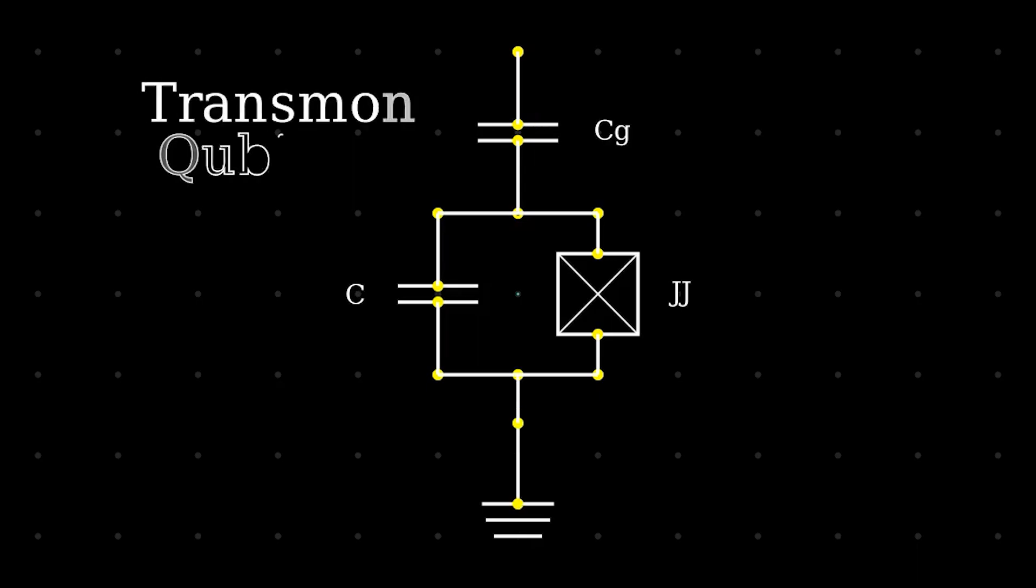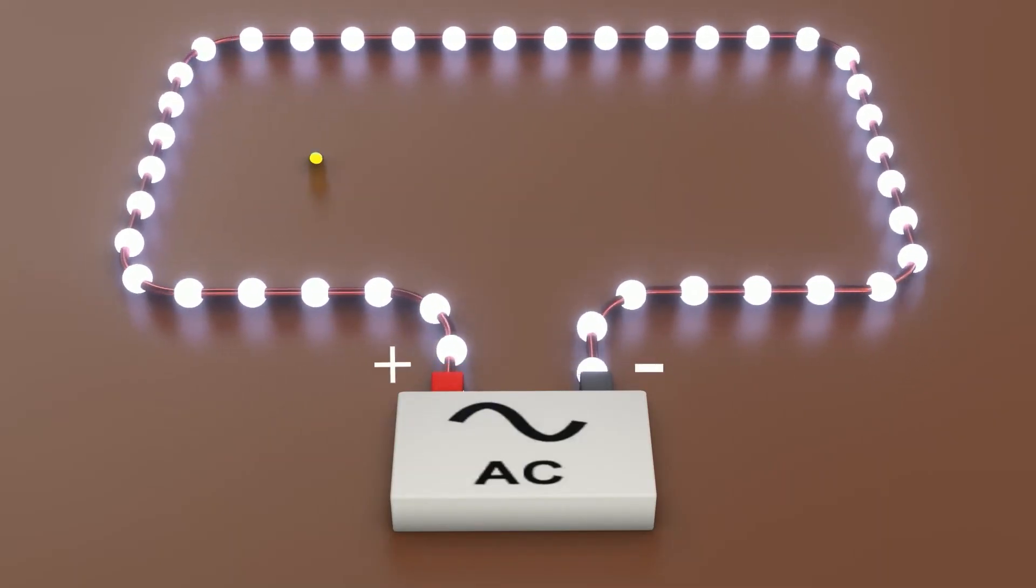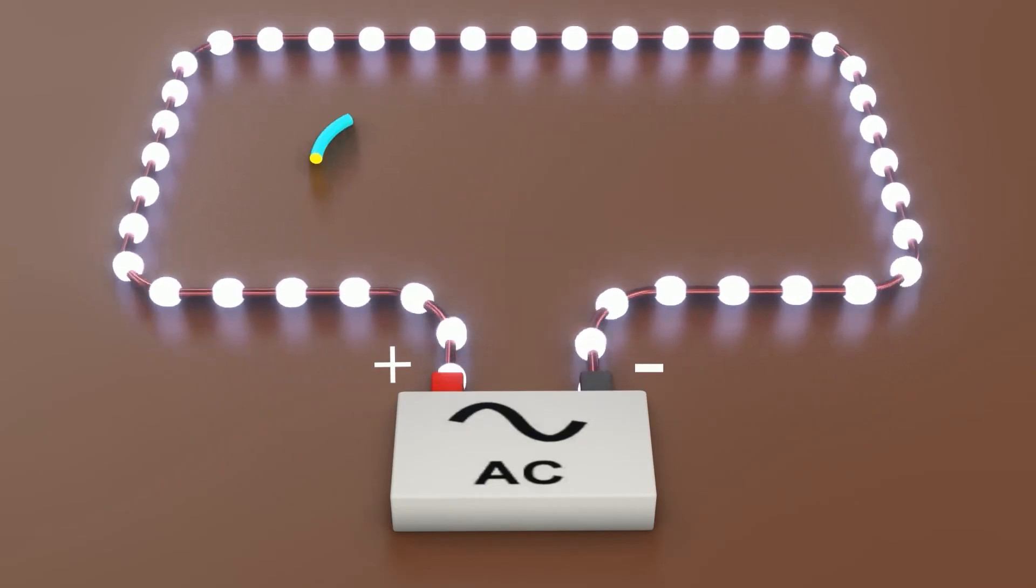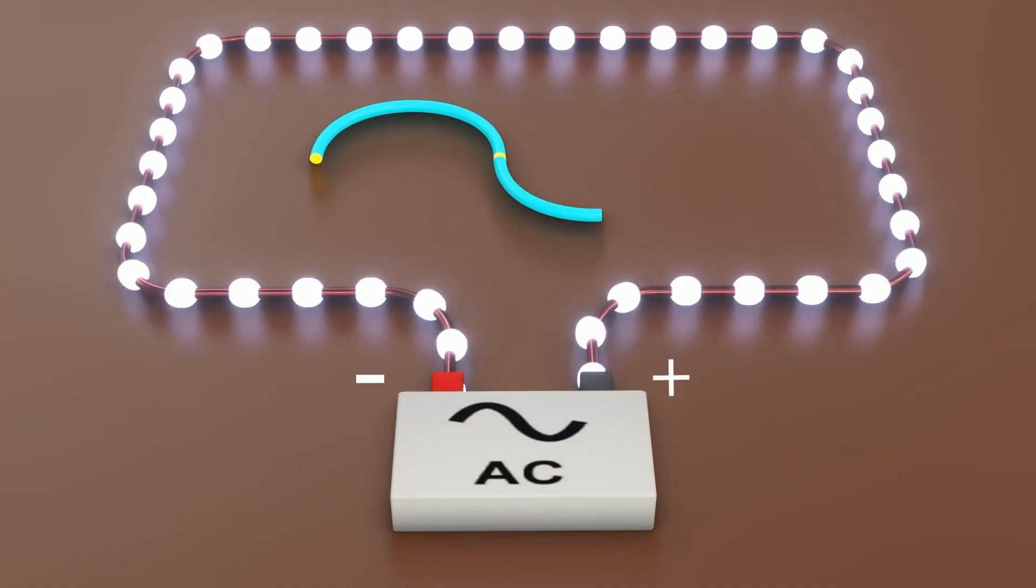Superconductors arise due to quantum mechanical effects, and so they lend themselves to making quantum computers. We can make superconducting circuits that work as qubits and use them very similarly to the trapped ion or neutral atom quantum computers. We can assign energy states to different ways that current flows. Depending on the type of superconducting qubit you make, and yes, there are many types, each one of them has a different circuit pattern.